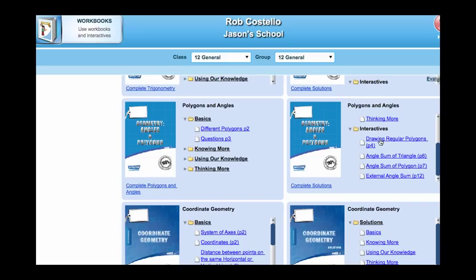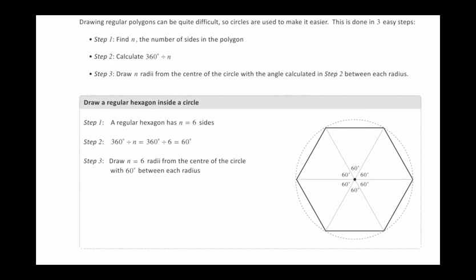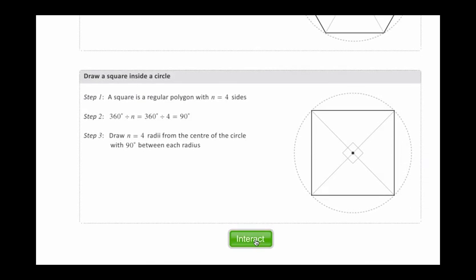This one is to do with constructing a regular polygon. So we've got the hexagon and the square on the page. And we can construct either of those with the use of the interactive.